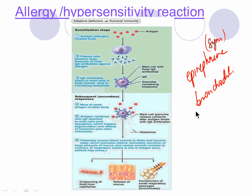This is why the allergen — whether pollen, fish, dust mites, or something else — causes such a response: the body overreacts, going into panic mode. That's why it's called a hypersensitive reaction — the immune system has become hypersensitive and overreacts, going above and beyond what it should do.